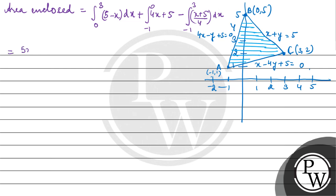Which comes out to be 5X minus X squared by 2, limit 0 to 3, plus 4X squared by 2 plus 5X, limit -1 to 0, minus X squared by 8 plus 5X by 4, limit -1 to 3.